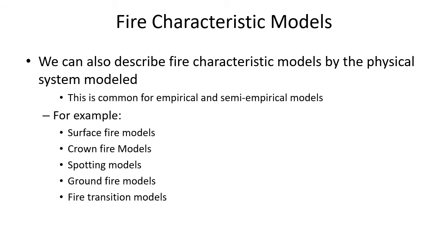We can also break these models up based on what type of fire or physical system we're modeling. There are different characteristic models for surface fire or crown fire - we've seen this with Rothermel, with different models for surface and crown fire. We have models for spotting - how far might we expect spotting based on forest and weather conditions. And models for ground fires, like smoldering ground fires, which we haven't really worked with. These are all different examples of fire characteristics we could try to model.